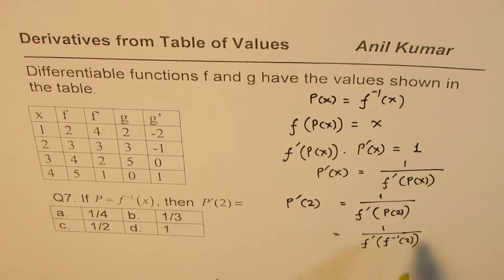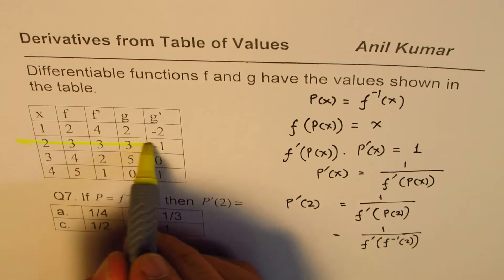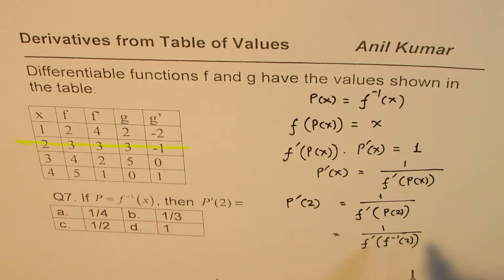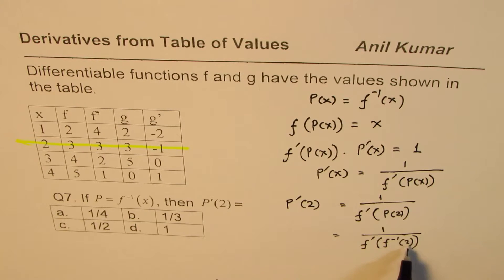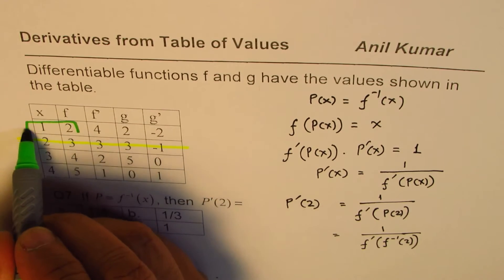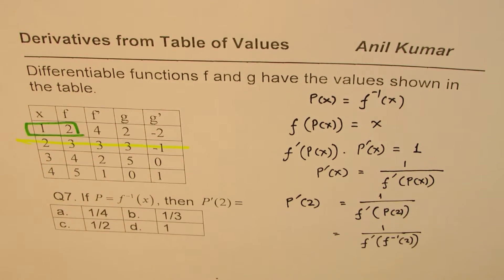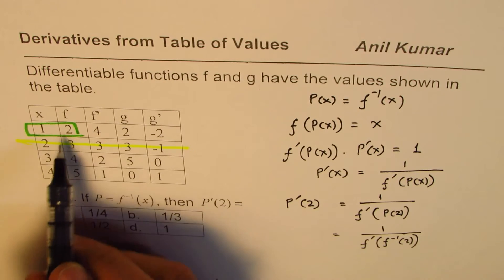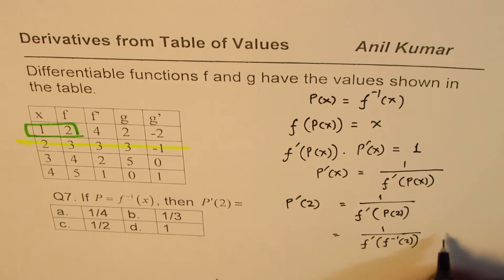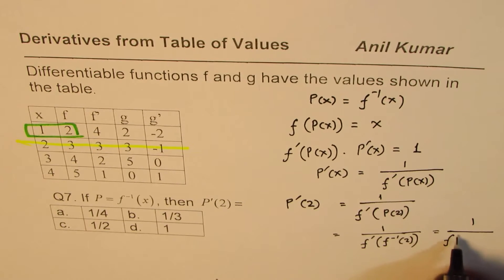From the table, we can read this value, f inverse of 2. So we will look into this row where x equals to 2 values are given to us. f inverse of 2 actually will be the other way. So we should actually look into this value. f inverse of 2, that means when y is 2, what is x? So we get this value equal to 1 over derivative. f inverse of 2 is 1.